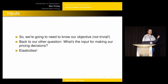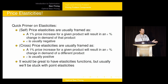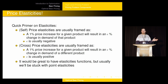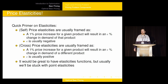Back to the question of inputs: the answer is price elasticity. A quick primer — a self-price elasticity is framed as: for a given product, if you increase the price by 1%, what is the percentage change in demand? We call that epsilon. For a given product, you'd expect it to be negative — when you increase the price, you lose some demand.